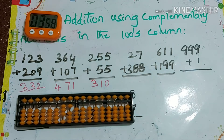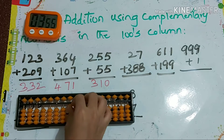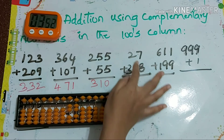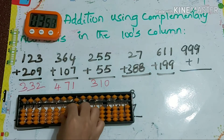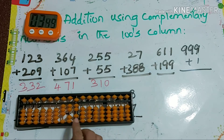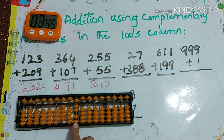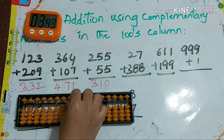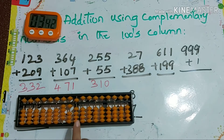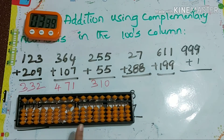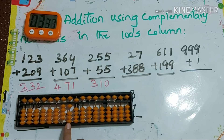Next: 727 plus 388. To add 8, we use plus 10 minus 2, then again plus 10 minus 2, so the answer is 1115.